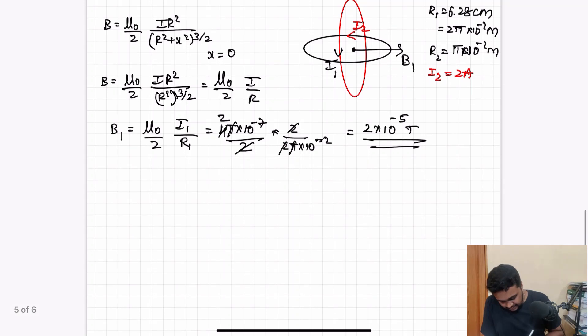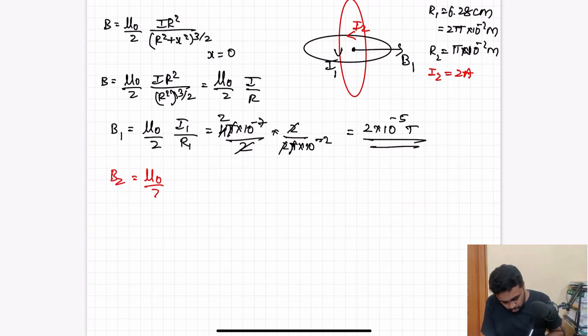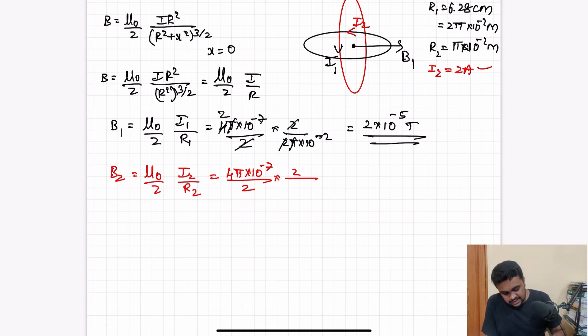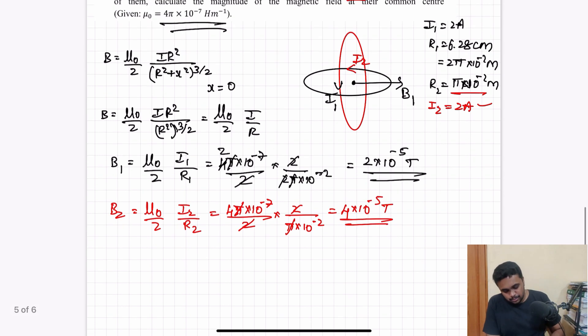B2 will be equal to mu naught by 2 times i2 by R2. That is 4 pi times 10 power minus 7 by 2 times 2 by pi times 10 power minus 2. After simplification, this becomes 4 times 10 power minus 5 tesla.